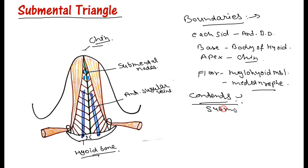And anterior jugular veins. So these are the contents: submental lymph nodes and anterior jugular veins.